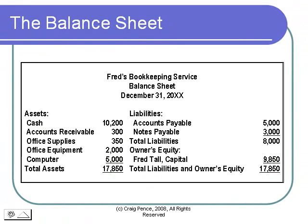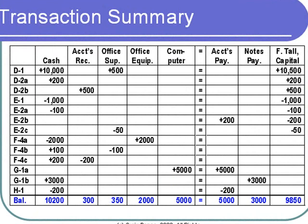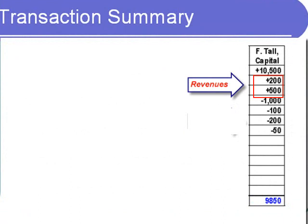Another statement is the income statement. To work out the income statement, we need to go back to our transaction summary and look at all the transactions that we've recorded in Fred's capital account. Recall that the $200 and the $500 represented revenues that were earned in the business — the $200 was a cash collection of revenues, and the $500 was work done on account. We then had expenses recorded: the $100, the $200 utility bill, and the $50 of supplies that had been used up. Remember that revenues from operating the business minus the expenses incurred equals the profit earned.